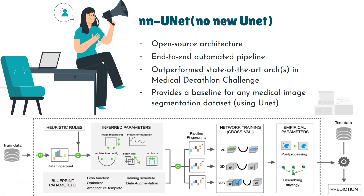And using that data, it will train on the best network configurations out of three — 2D, 3D, and 3D cascade — based on U-Net architecture. And then after post-processing and finding out the best ensembling strategy on its own, it gives you the best model possible with your dataset.